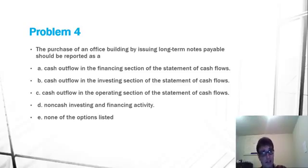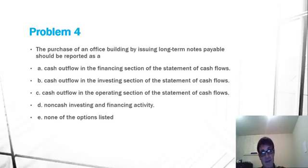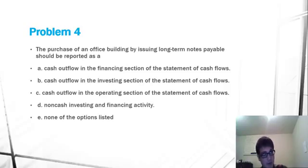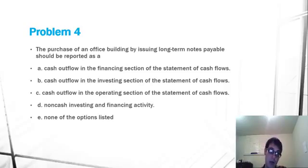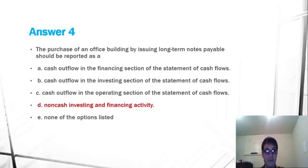Problem 4 has to deal with the purchase of an office building by issuing long-term notes payable. So the purchase of an office building seems like it would be an investing activity, while issuing long-term notes payable seems like it would be a financing activity. But the interesting thing about this question is that there is no cash exchanged in this process. So as we will see here, it actually is a non-cash investing and financing activity.